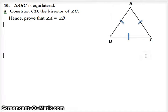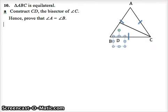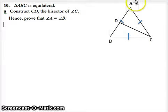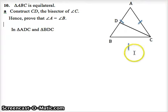It tells us to construct CD, which is the perpendicular bisector of C. We can't do this proof to show that angle A equals angle B unless we have congruent triangles. At the moment we've only got one triangle, which is why we're constructing CD. So I'm bringing CD in now. We need to say which triangles we're talking about because we've just formed two triangles — triangle ADC and triangle BDC.